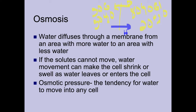If the solutes can't move because the cell membrane is semi-permeable — if they're too large or charged, or there's no transporter protein — water will still enter or leave the cell. This is referred to as osmotic pressure. Osmotic pressure is the tendency for water to move into a cell and increase the turgor pressure of that cell, so the cell gets tighter as it fills up with water.